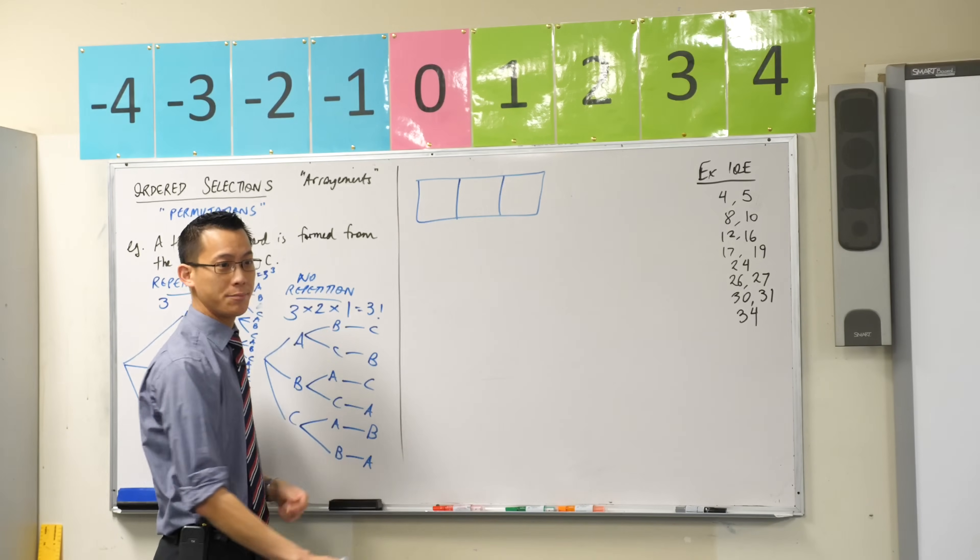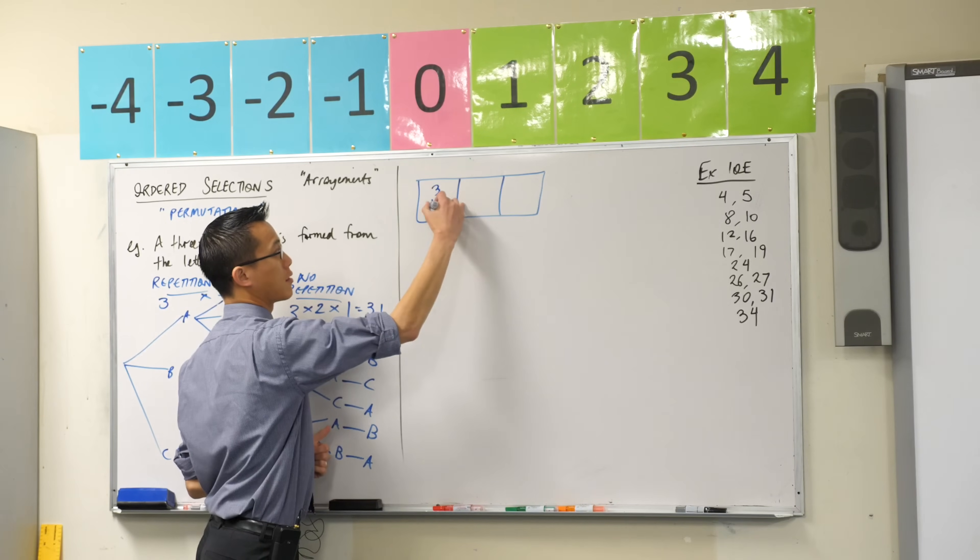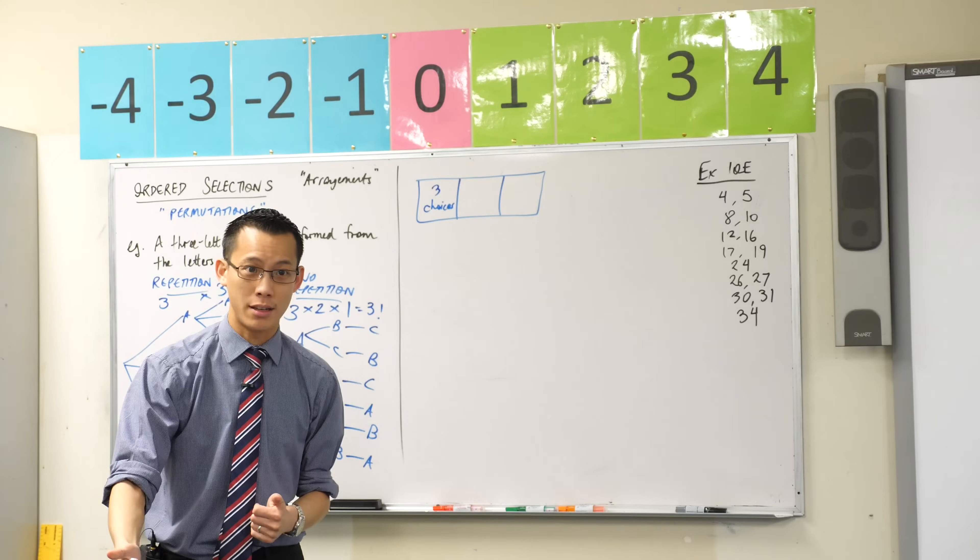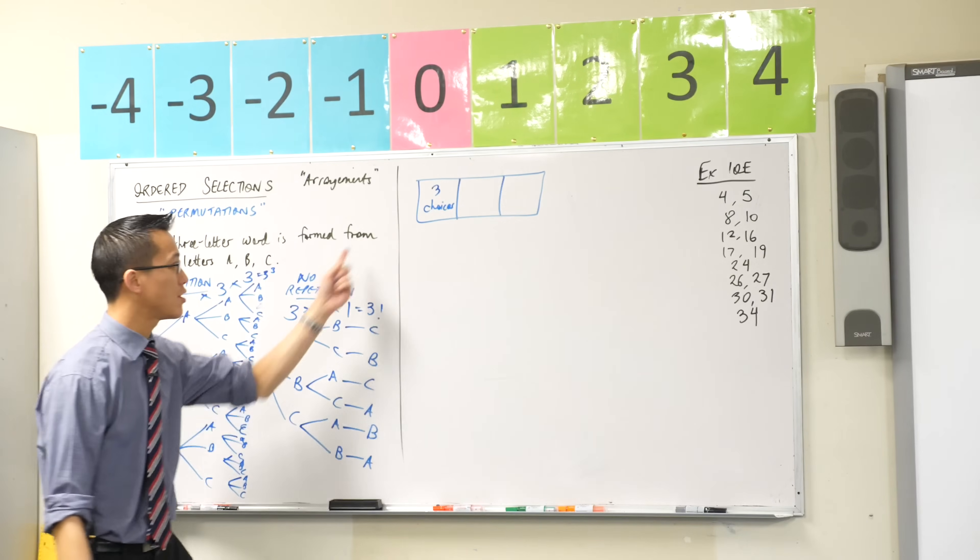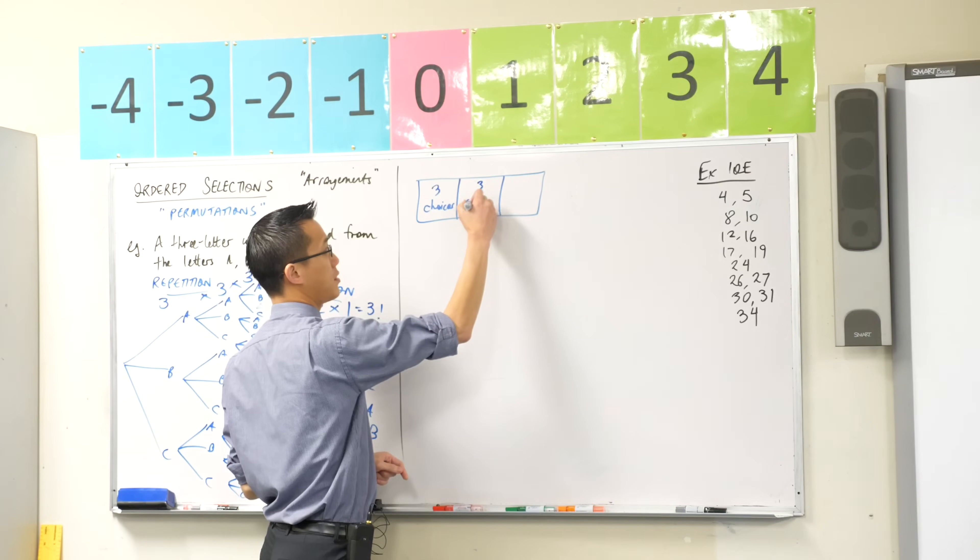For the first spot here, this is the first example with repetition. I've got three choices for that first letter: A, B, or C. If I allow repetition when I go to the next letter, how many choices do I have? Still three. Three choices.